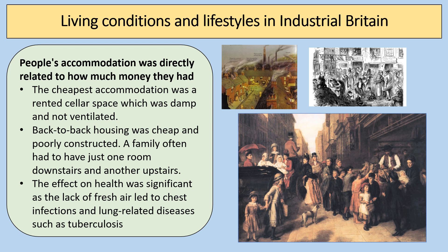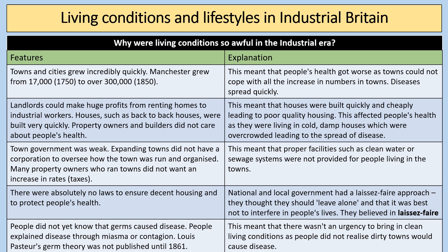People's accommodation was directly related to how much money they had. The cheapest was a rented cellar space — damp and unventilated. Back-to-back housing was cheap and often poorly constructed, with a lack of building regulations to govern quality. Families often had just one room downstairs and one upstairs. The effect on health was significant: a lack of fresh air led to chest infections and lung-related diseases such as tuberculosis. William Frith's pictures show the stark divide between the wealthy in their horse-drawn carriages and the poorer people in society.